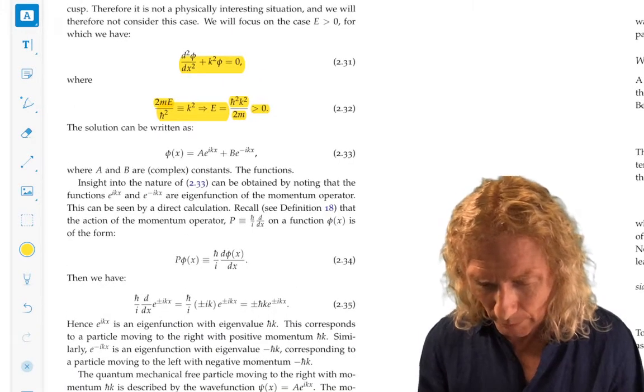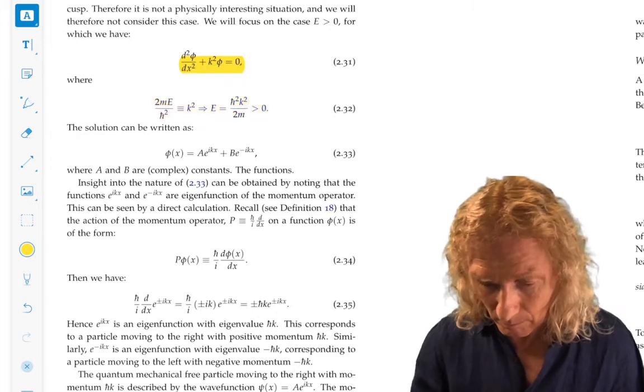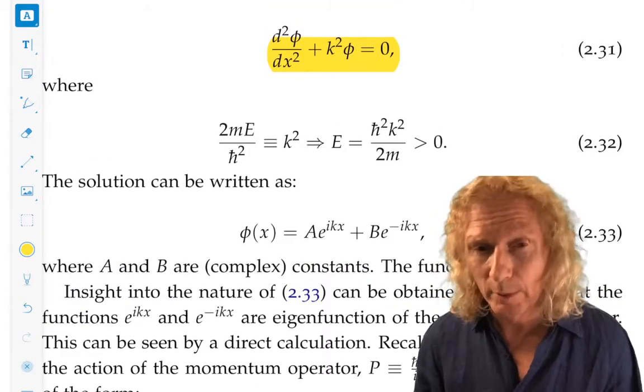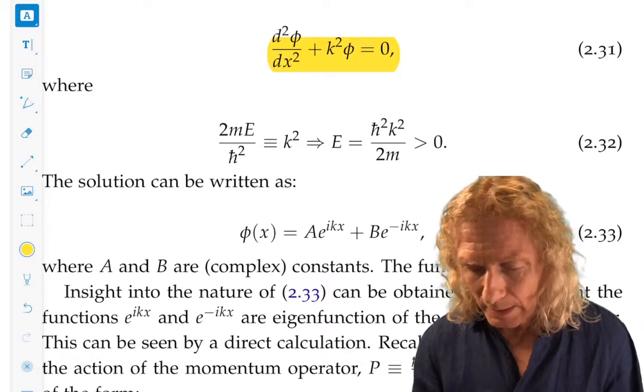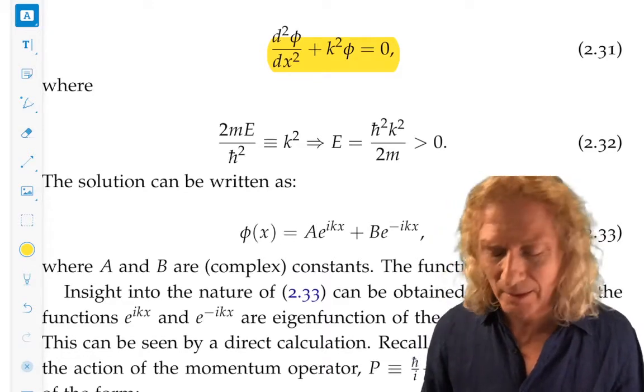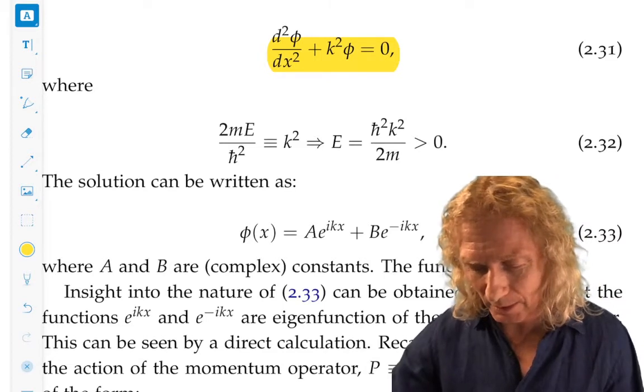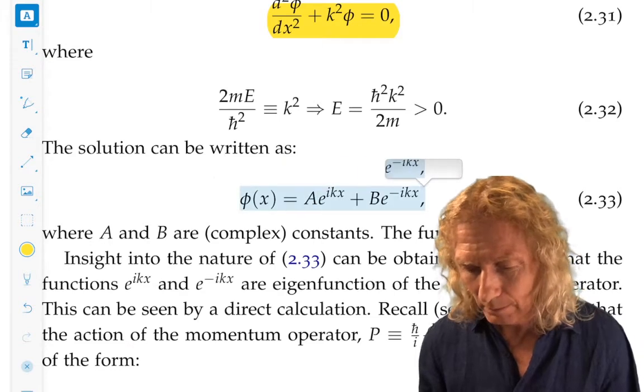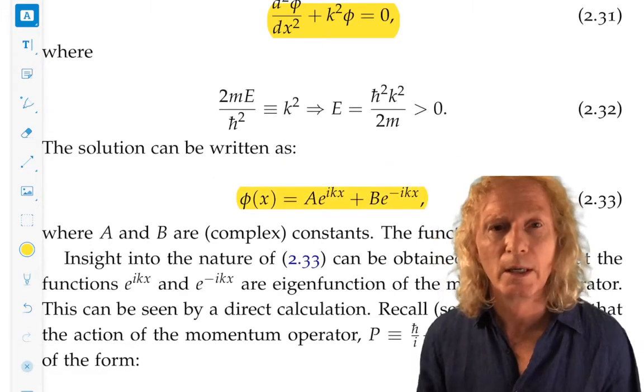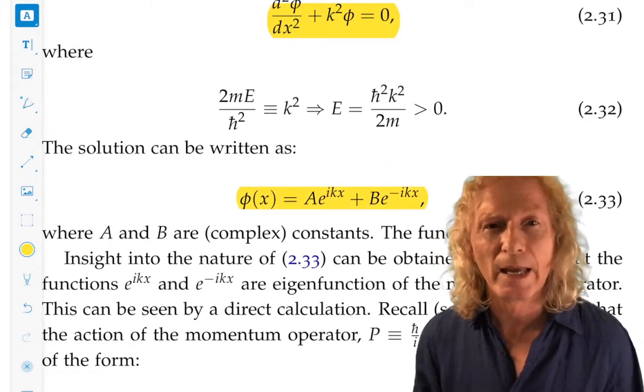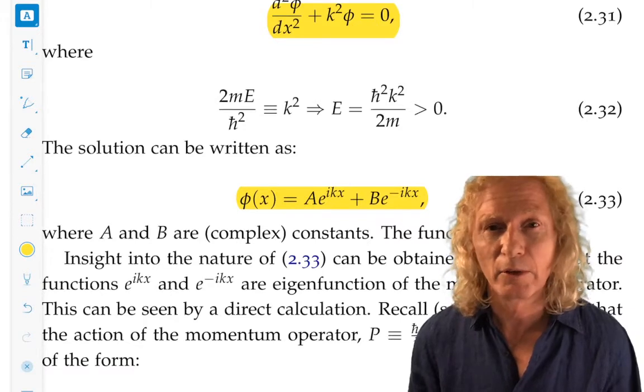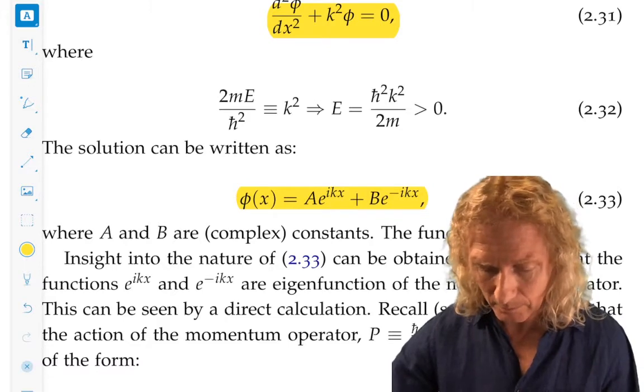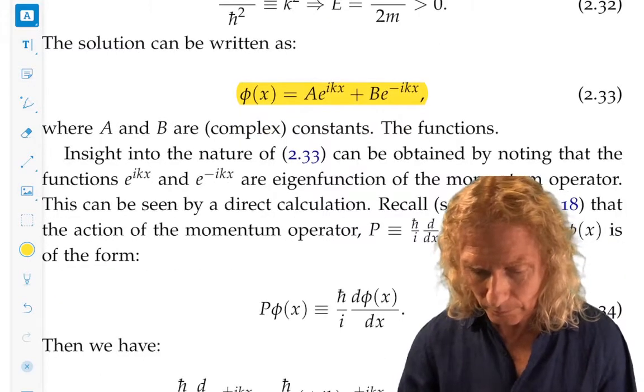Back to the free particle equation quantum mechanically with E greater than zero. Sometimes instructors say easily a little too often, but you can verify that the general solution of equation 231 is given by phi(x) is A e to the ikx plus B e to the minus ikx. In general, A and B are complex constants.